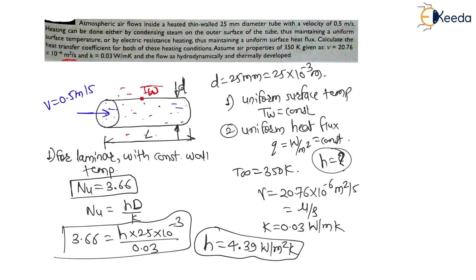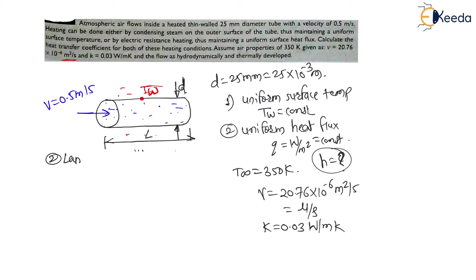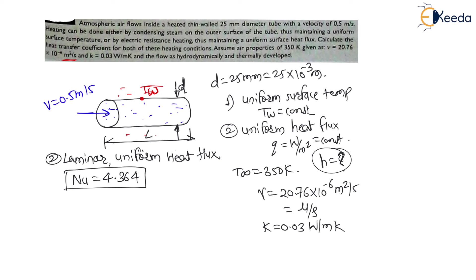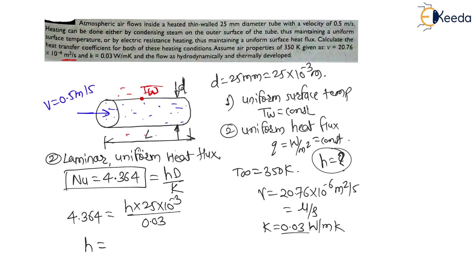Now for the second case — uniform heat flux: for laminar fully developed flow through a pipe with uniform heat flux, the Nusselt number is 4.364. So 4.364 = h × (25 × 10⁻³) / 0.03. Solving gives h = 5.24 W/m²·K for uniform heat flux.